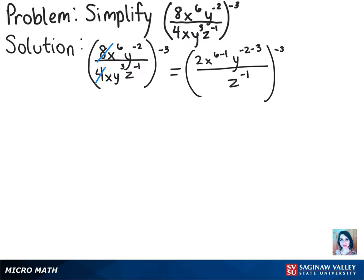Once we solve those subtractions in the exponents, we're going to have 2 times x to the fifth power times y to the negative fifth power over z to the negative first power, once again, all multiplied by that negative third power.